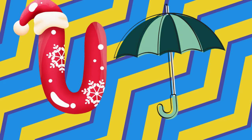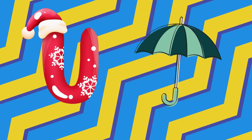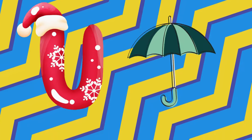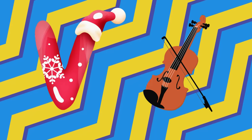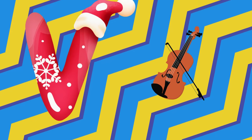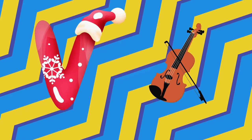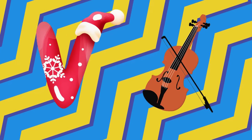U is for umbrella, u-u-umbrella. V is for violin, v-v-violin.